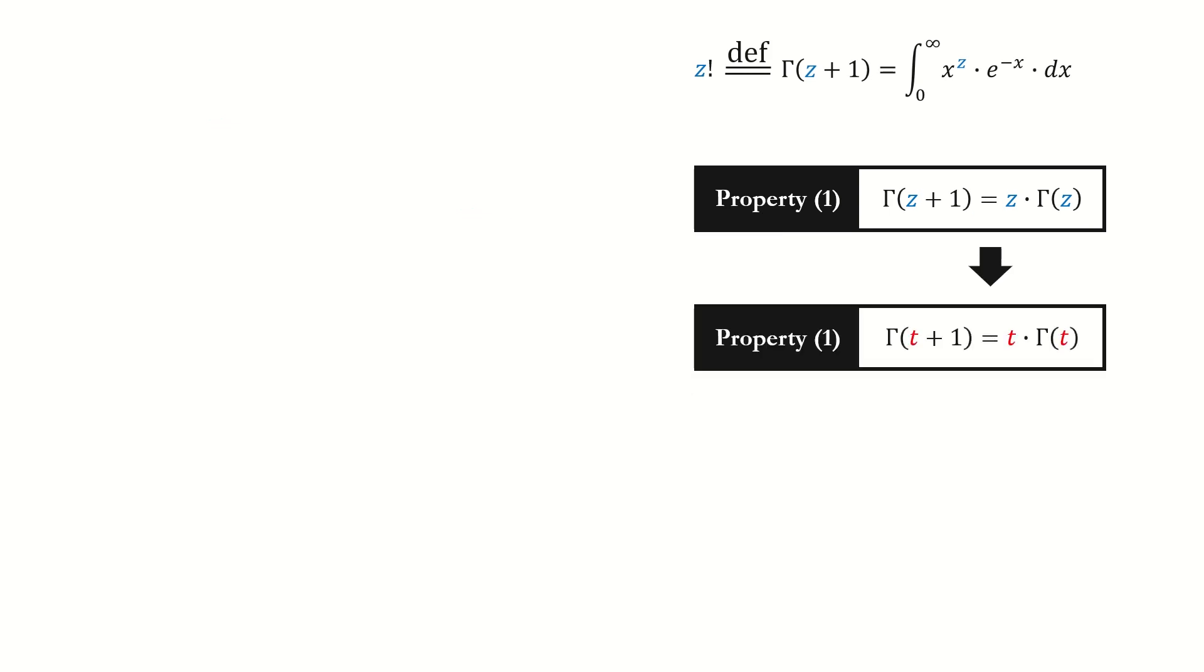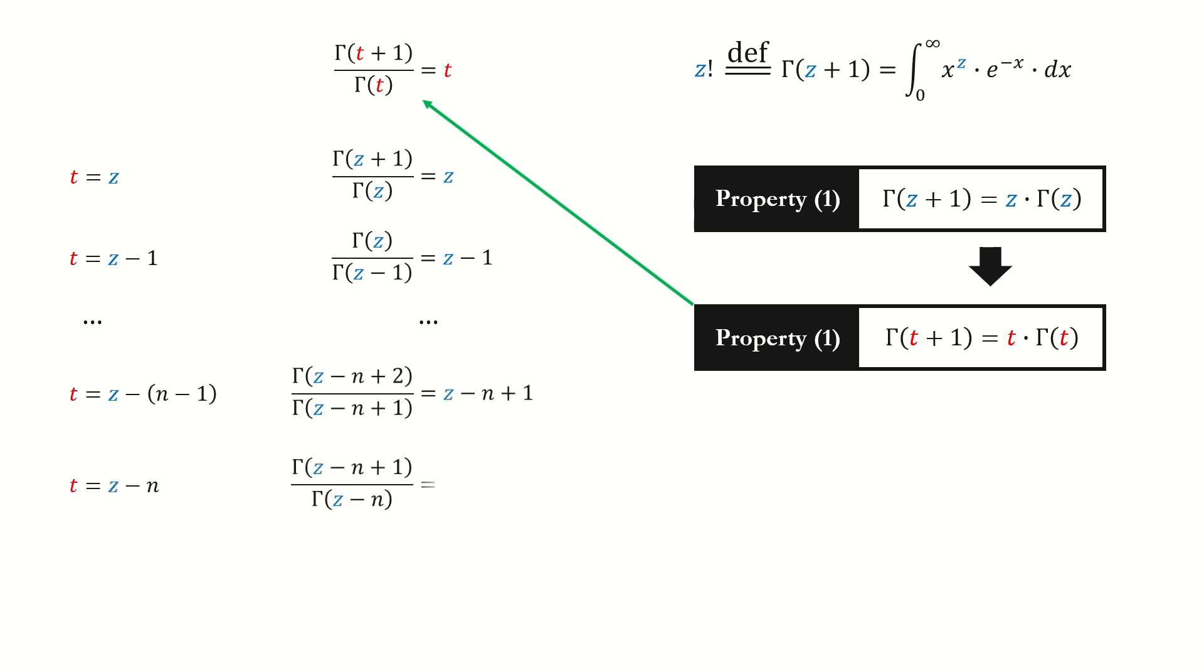To better visualize, we replace z with t. Then we divide gamma t on both sides. We set t equals z, then we set t equals z minus 1. Keep going until t equals z minus n.